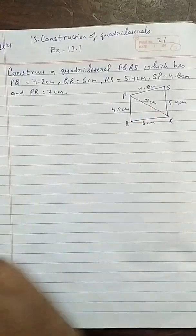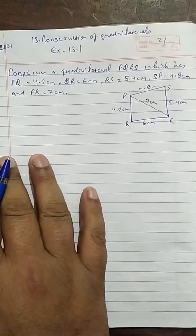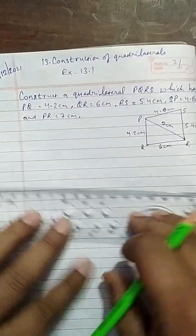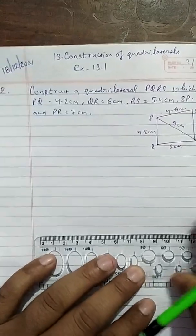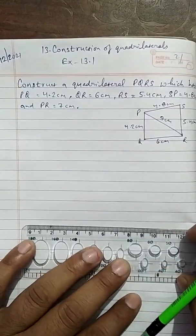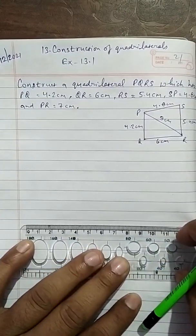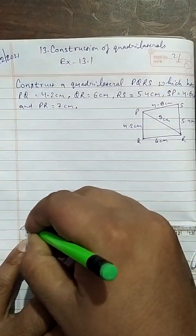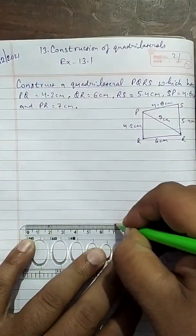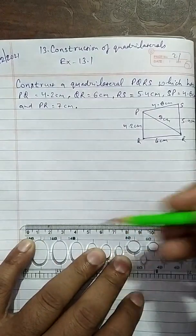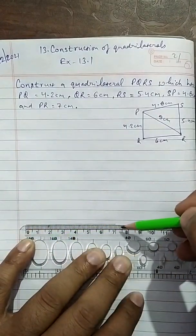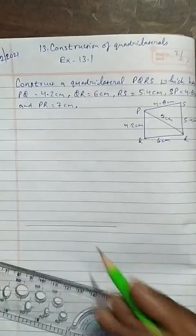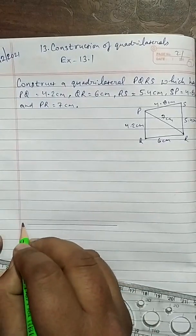So we have to start with diagonal always. This is 7cm, start with 0 to 7, this is 7cm, PR. Mark here PR.